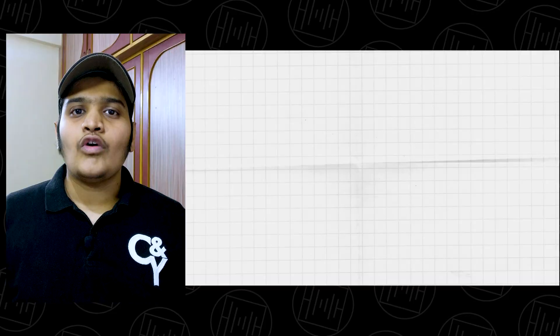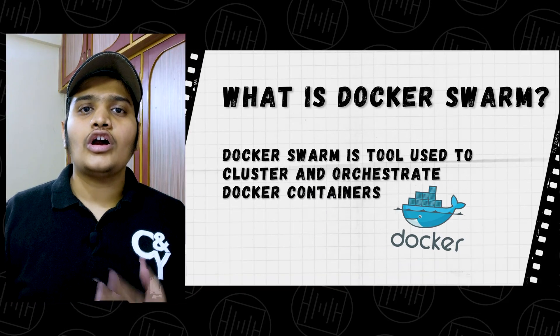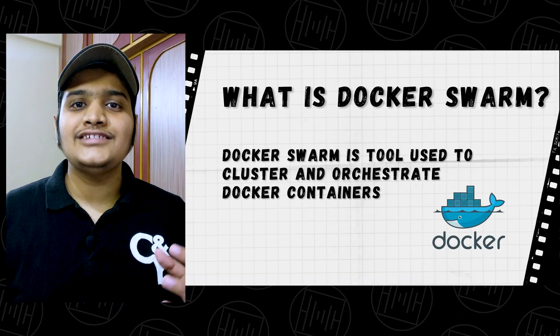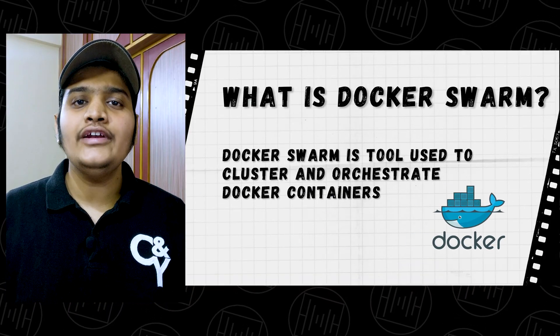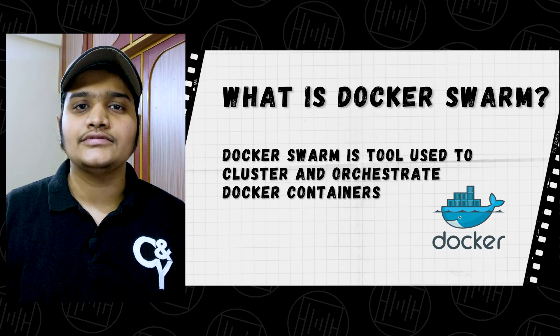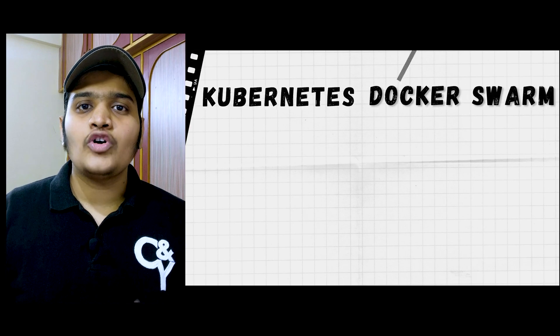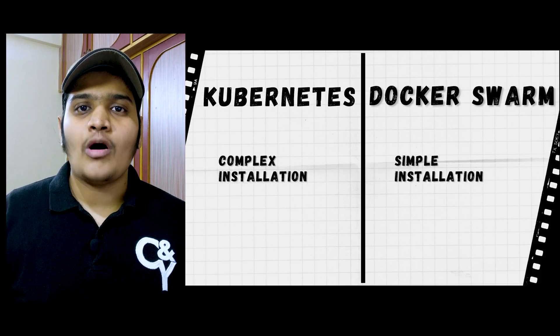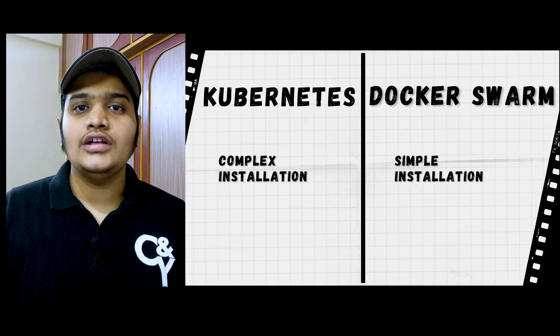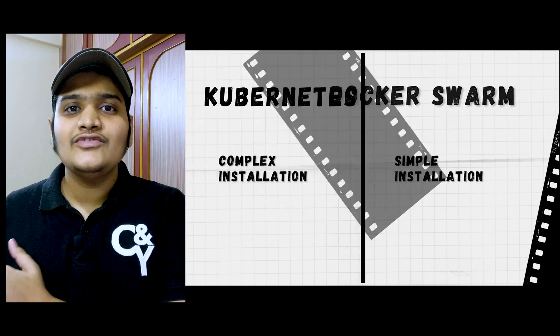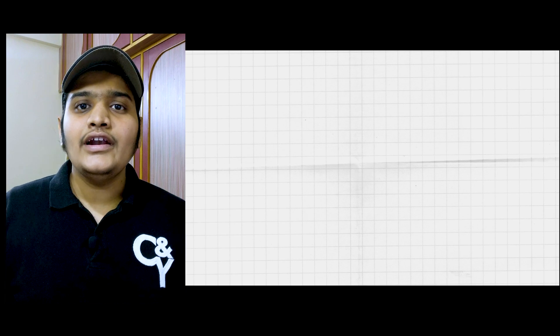When everyone compares Docker and Kubernetes, they actually mean to compare Docker Swarm and Kubernetes. Docker Swarm is a tool used to cluster and orchestrate Docker containers — similar to what Kubernetes does. Let's see the differences: the installation of Kubernetes is very complex, whereas the installation of Docker Swarm is very easy.